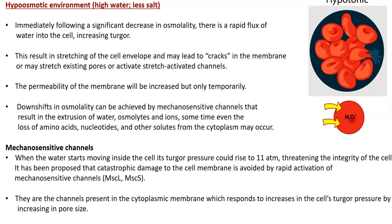Consequently, the permeability of the membrane increases, but only temporarily. Downshifts in osmolality can be managed by special channels called mechanosensitive channels, which play a role in extrusion of water, osmolytes, ions, and sometimes even amino acids, nucleotides, and other solutes from the cytoplasm to the cell exterior.